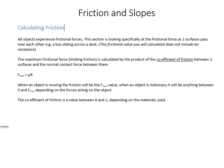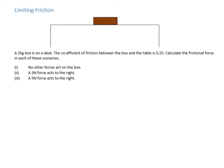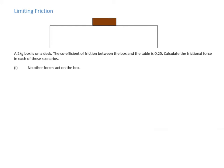Okay, so let's look at some problems putting friction into action. So we've got a desk, which we're going to assume is horizontal in this example. And we've got a two kilogram box sitting on it. And we've got a coefficient of friction of 0.25. And we're going to look at calculating the frictional force in these three different scenarios. So first scenario, there's no other forces acting on it. So let's think about it.